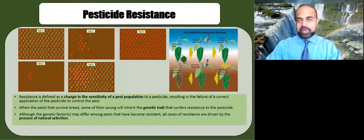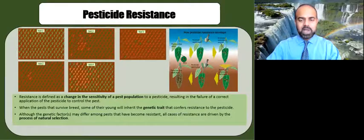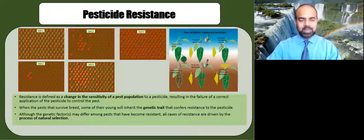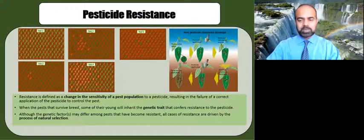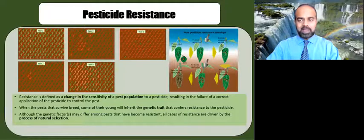With respect to resistance management, IPM is definitely a good technique. Growers can help delay the development of resistance by applying pesticides only when needed, rotating between different chemical classes, and using pesticide rates within the label range. Integrating non-chemical approaches such as pheromone mating disruption and cultural control can also delay the onset of pesticide resistance.